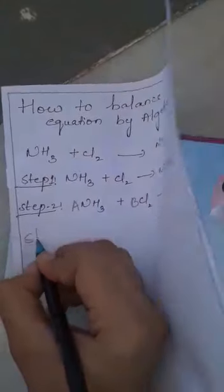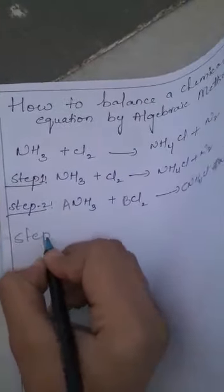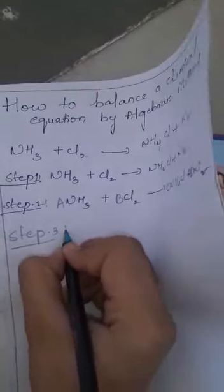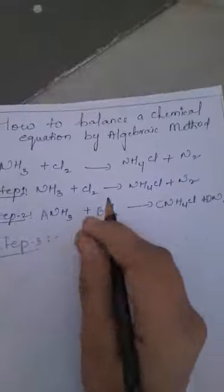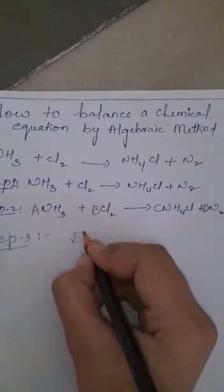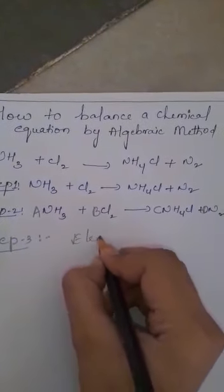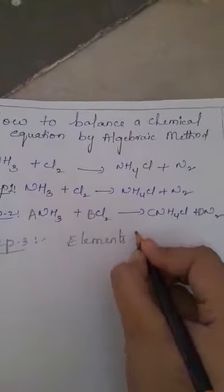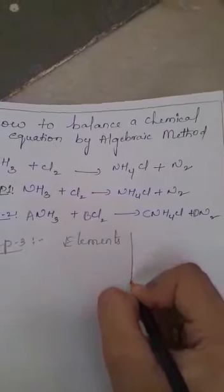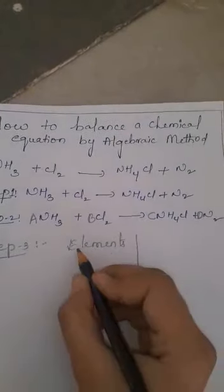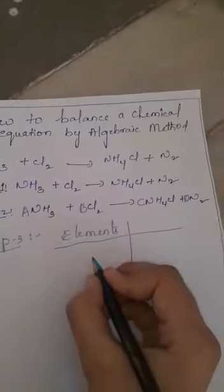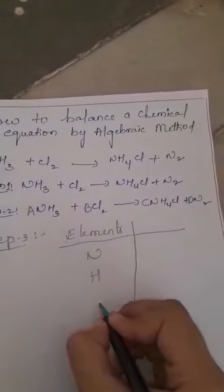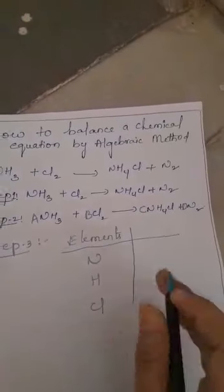In Step 3, we need to write the elements which are present in the equation — that is Nitrogen, Hydrogen, and Chlorine.